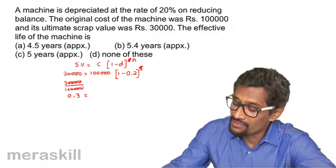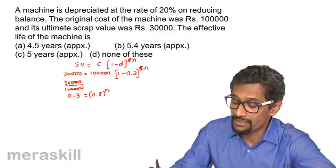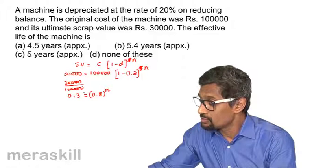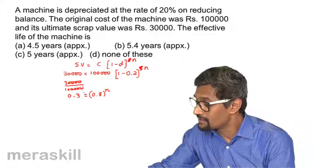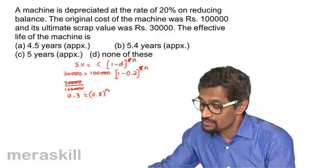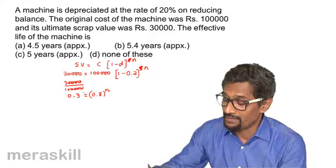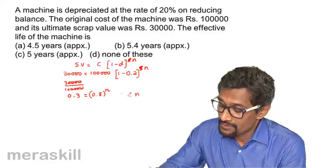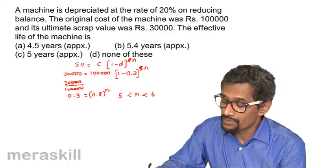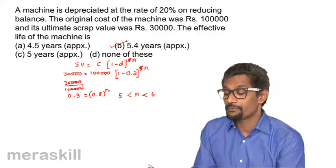We need to find n such that 0.8 raised to n equals 0.3. Computing: 0.8 raised to 5 is approximately 0.32, and 0.8 raised to 6 is approximately 0.26. Since 0.3 lies between these values, n is between 5 and 6. The effective life of the machine is approximately 5.4 years.